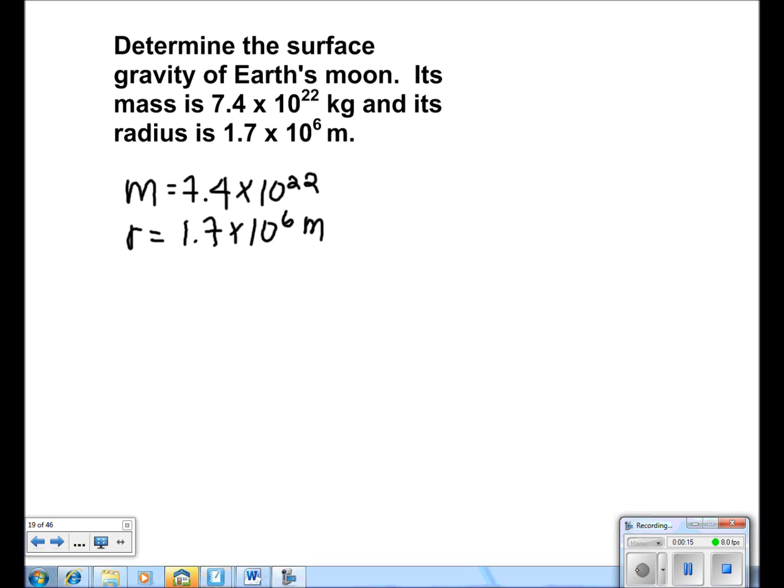We are always given that G is equal to 6.67 times 10 to the negative 11 newtons times meters squared over kilograms squared.